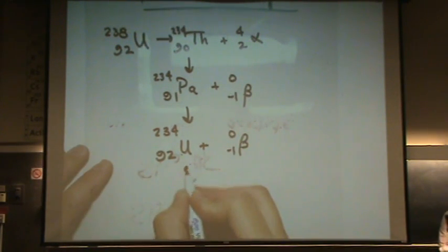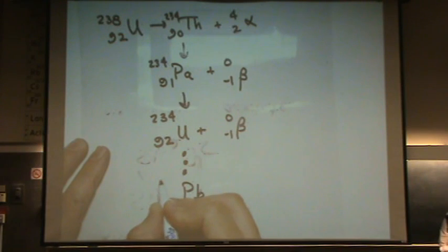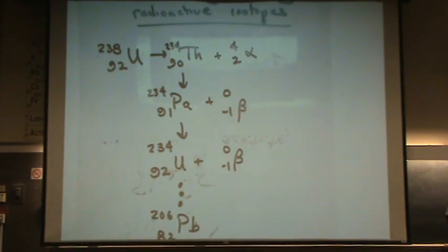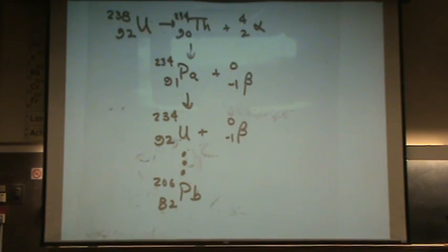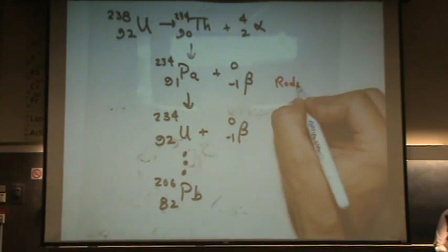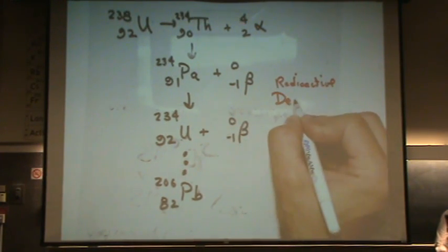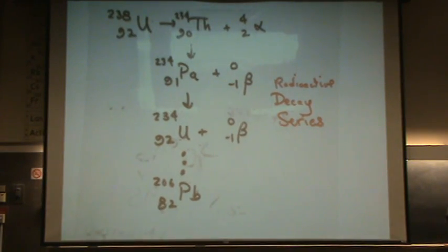This will react and react and react until it gets down to lead, which is stable, 82-206. So this is a naturally occurring process. We use uranium to date the age of the Earth and other such things in our universe. And this is called a radioactive decay series.